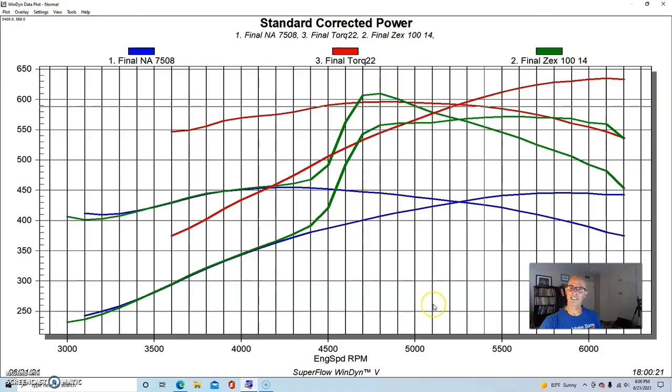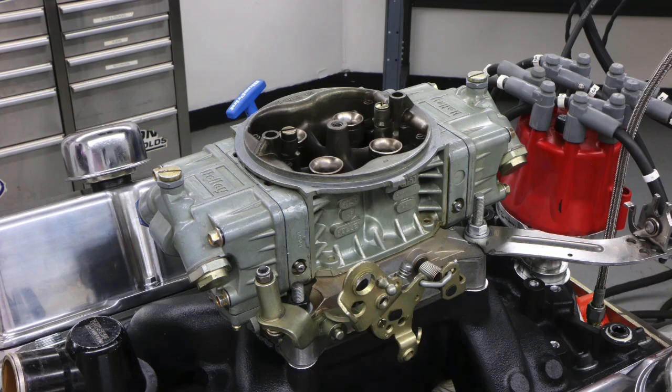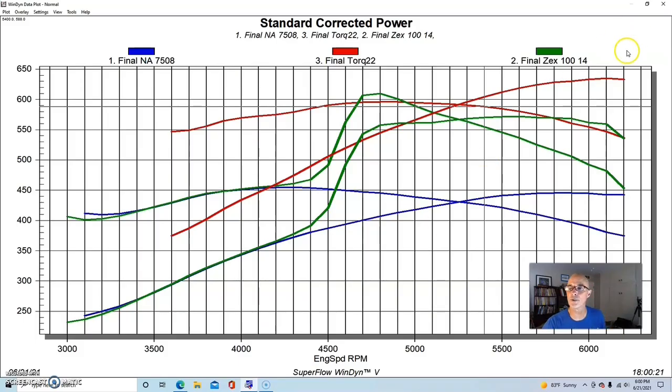Here is the Torque Storm. This is getting a little bit busy, but you can see the Torque Storm made more peak power than the nitrous. We ran the Torque Storm with the same dual plane intake manifold. We replaced the 750 with an 850 blow-through carburetor from the guys at CSU.